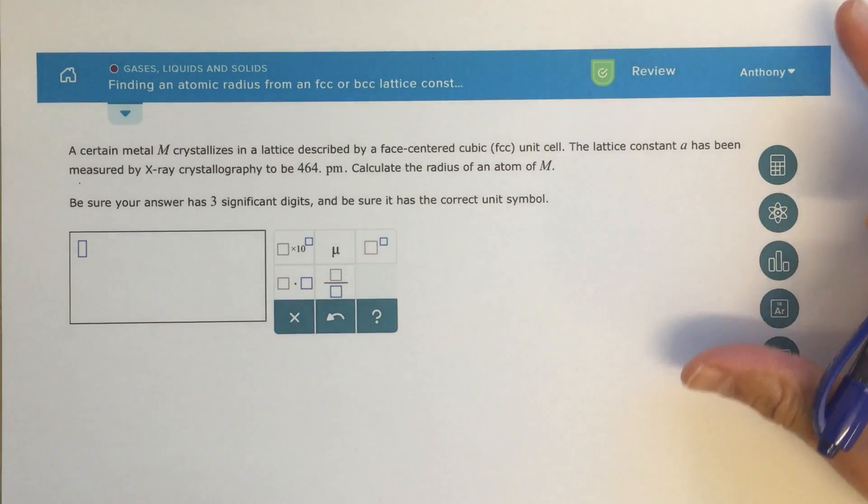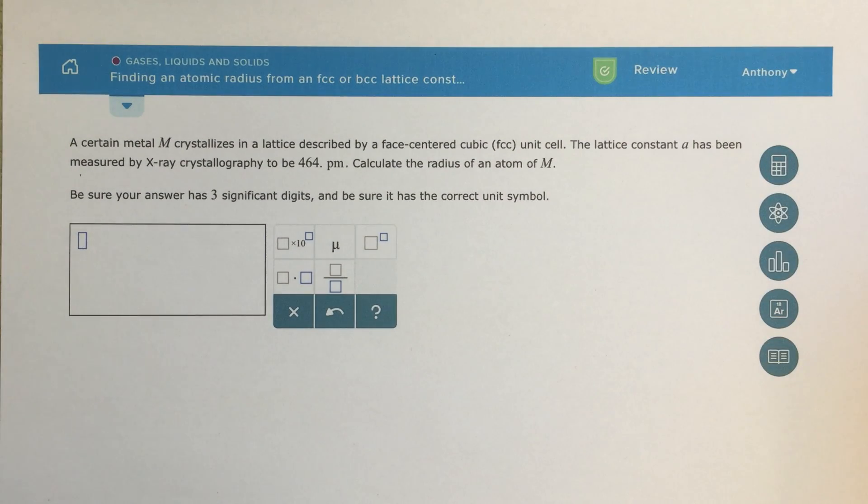Alright class, so this topic is called finding an atomic radius from an FCC or BCC lattice constant. FCC, that's face-centered cubic, and BCC, that's body-centered cubic. We need to have a good picture in our minds of what those look like.